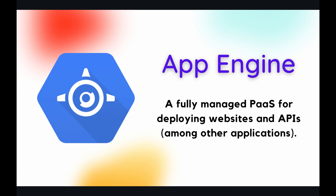Also, App Engine is for deploying websites and APIs. When I first started with App Engine, I used it exclusively for deploying websites, which is a perfectly fine use. But it's not restricted to just websites — you can deploy literally any application such as your backend API. So if you were developing a mobile application, you could write your server-side API and then deploy to App Engine. There are a lot of other use cases for App Engine, but we'll be covering them in future episodes on this course.